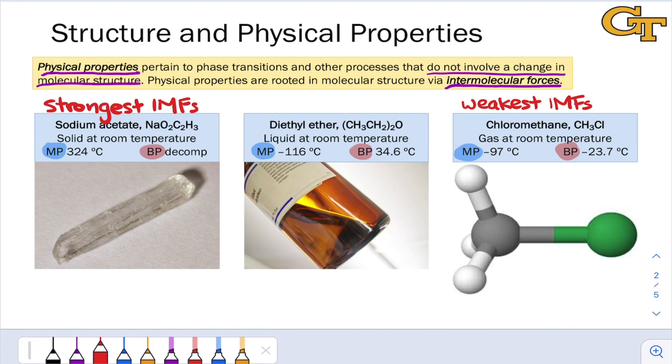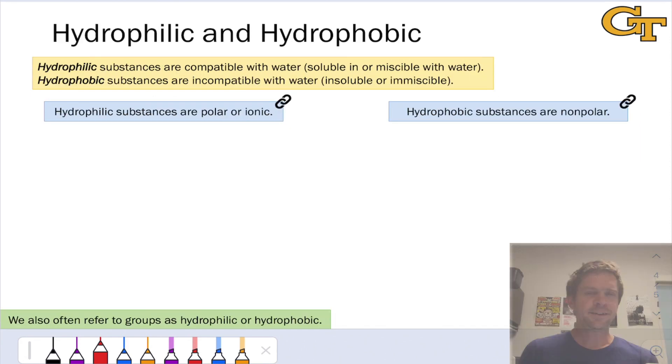In thinking about intermolecular forces and physical properties, we can kind of group organic compounds into two classes, and also the groups within them into two classes, hydrophobic and hydrophilic, molecules or groups. So the bottom of the slide makes the point that we can use these terms to refer to whole molecules, or actually more commonly, I would say, groups within molecules, regions that are hydrophilic and hydrophobic.